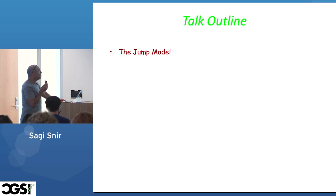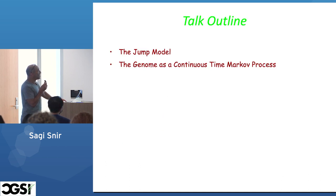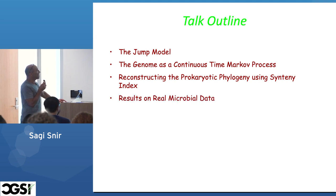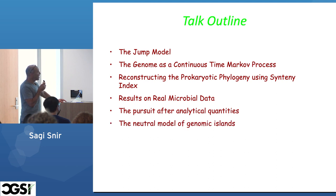The outline is the following: we first introduce the JUMP model, then a genome as a continuous-time Markov process, reconstructing the prokaryotic phylogeny using the Synteny index. This project spans quite a few papers and years, with results on real microbial data, the pursuit after analytic quantities, and the neutral model of genomic islands.